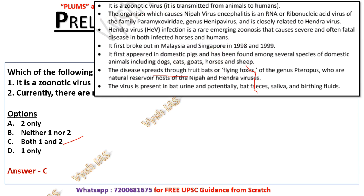Nipah is a zoonotic virus, meaning it comes from animals and is transmitted to humans. There are no vaccines at present. RNA is also a very important topic — in the last two years, two to four questions came on RNA and DNA. Nipah first broke out in Malaysia and Singapore in 1998–99, and later appeared in Kerala, India. One full district had to be shut down at that time.